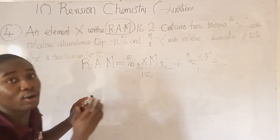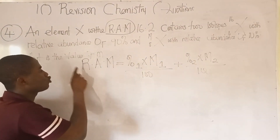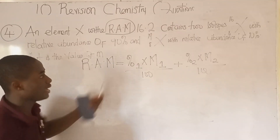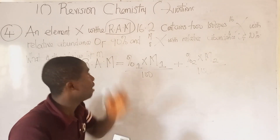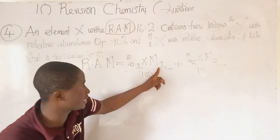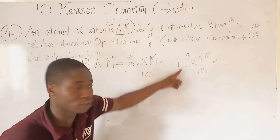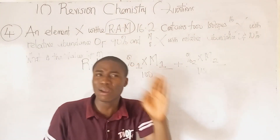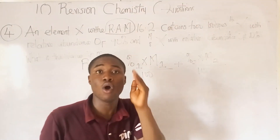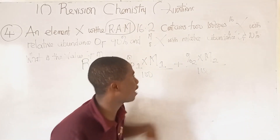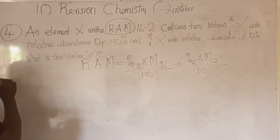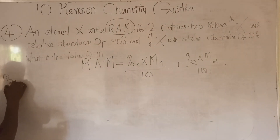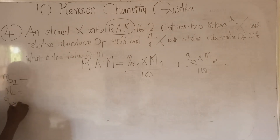I'm going to write out the formula: RAM equals (percentage₁ × mass number₁ / 100) plus (percentage₂ × mass number₂ / 100). In the video lesson I explained every parameter, but briefly: RAM means relative atomic mass; percentage₁ is the percentage abundance of the first isotope; M1 is the mass number of the first isotope; percentage₂ is the percent abundance of the second isotope; M2 is the mass number of the second isotope.